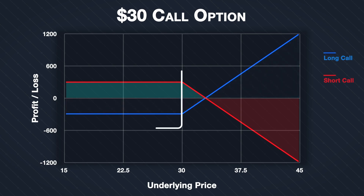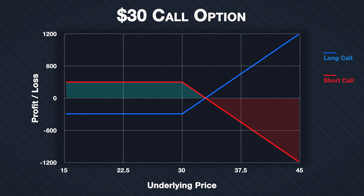When the underlying price is below the strike price at expiry, the call option buyer has a fixed risk. For the call option seller, this means they have a fixed profit when the underlying price is below the strike price at expiry. Unlike the buyer, the seller has a cap on their profit, and that is the premium they collected for the option — in this case, $3 per share for a total of $300.